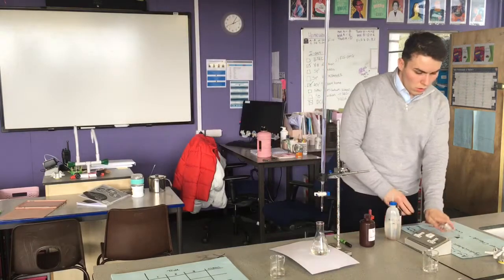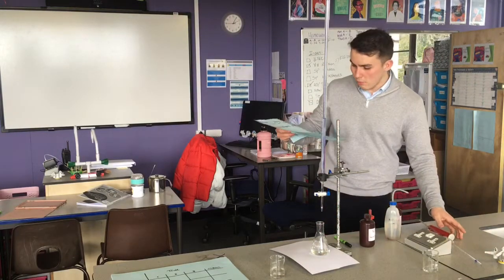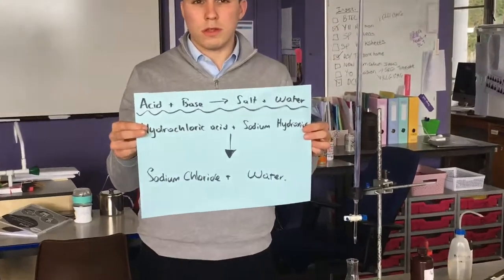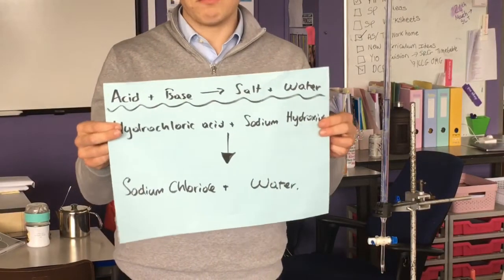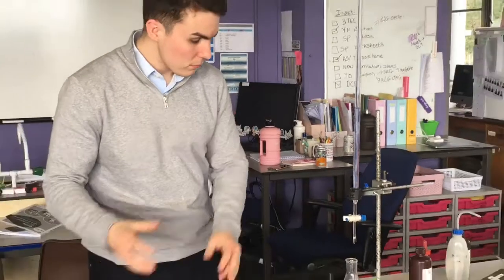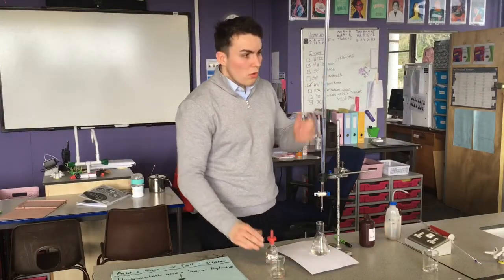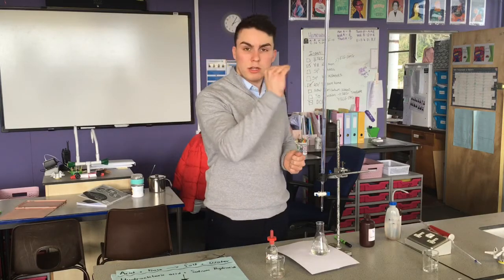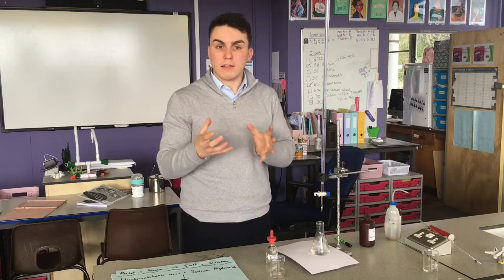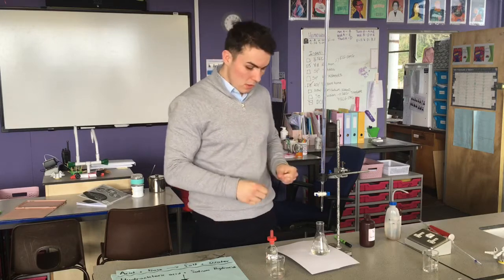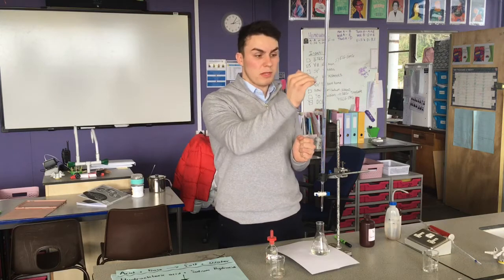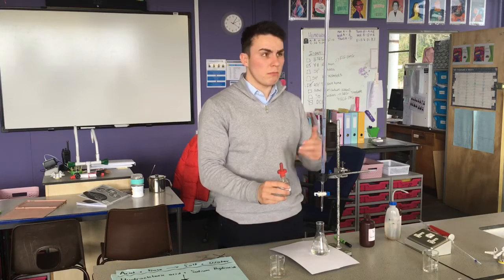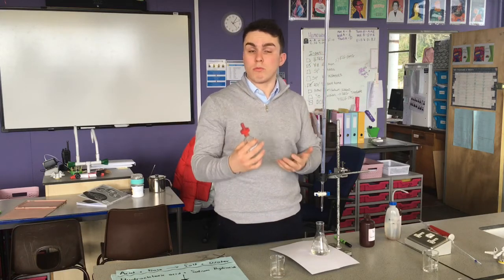Finally, under acids and bases we know an acid plus a base gives a salt plus water. We can use titration to make a salt. What we would do is run this experiment two, three, four times, get a lovely mean of how much acid and base is needed for that one-to-one neutralisation reaction. I'm then going to run the same experiment — say it took 26 centimetres cubed — but without my indicator, so to make the salt we're not going to use the indicator.